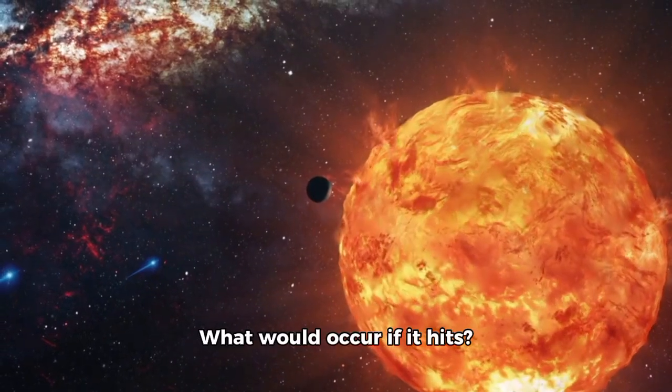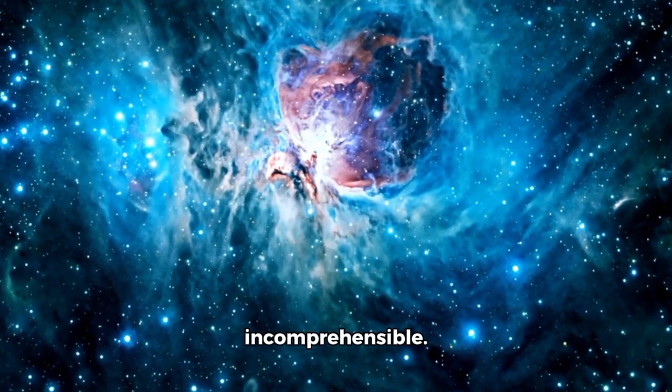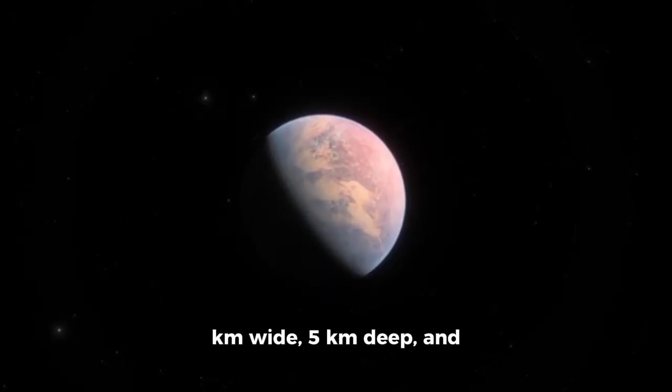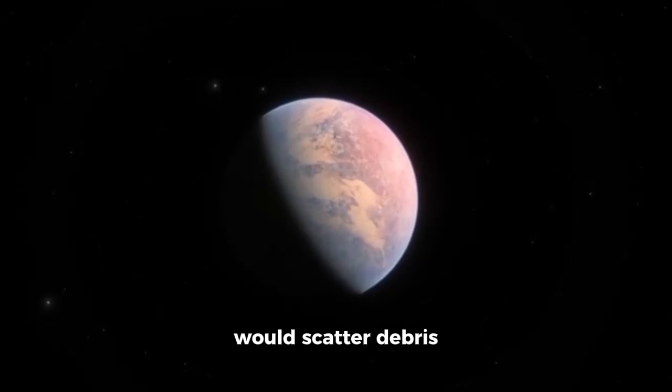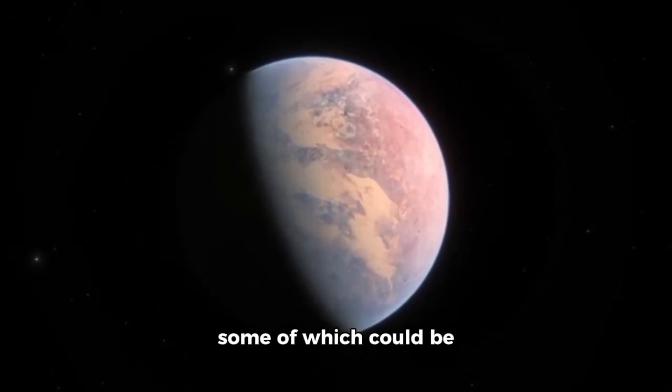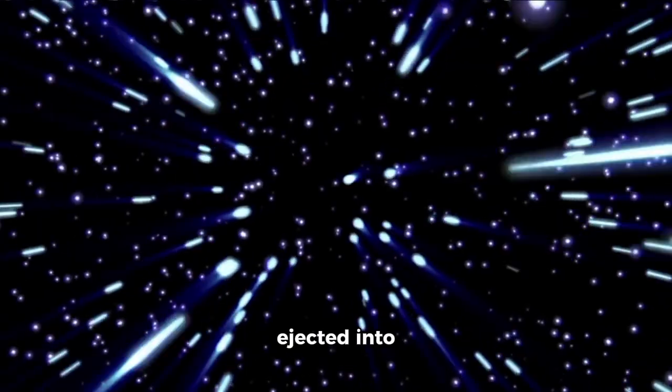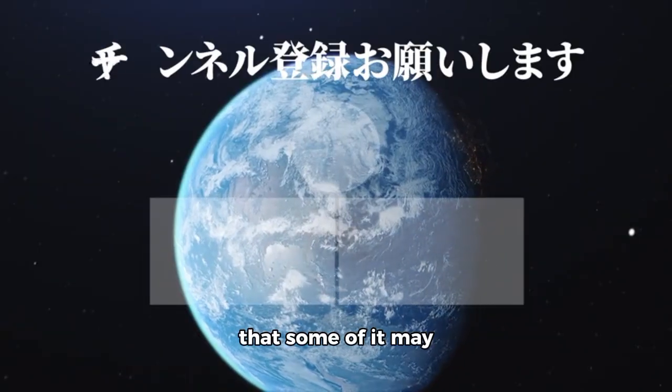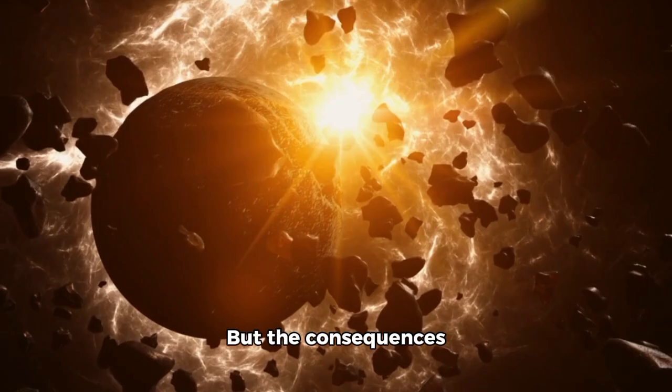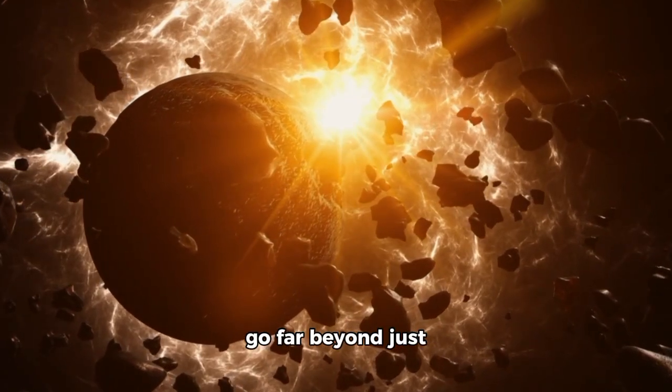What would occur if it hits? The answer is almost incomprehensible. With a mass estimated at 10 billion tons and a speed of 57 kilometers per second relative to Mars, an impact would unleash more than 2 million megatons of energy—thousands of times the most massive nuclear explosion in Earth's history. The crater would be 60 kilometers wide, 5 kilometers deep, and would scatter debris across Mars' orbit, some of which could be ejected into interplanetary space. Yes, that indicates that some of it may eventually reach Earth.